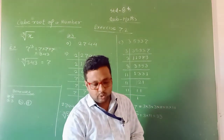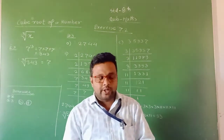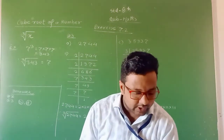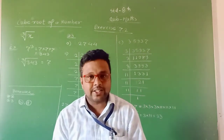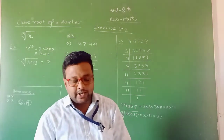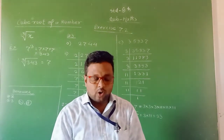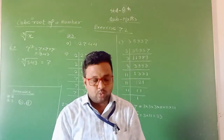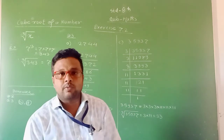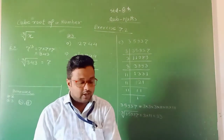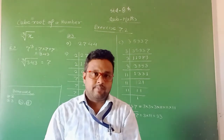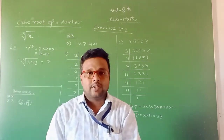Here I take some questions from exercise 7.2. Question number 1 is True and False — write T for true and F for false for each of the following statements. I am going to read the statements given on page number 130. Statement A: There is no cube root of a negative integer. Is it true or false? It is false.